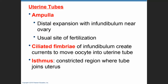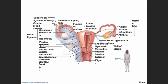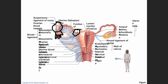The uterine tubes consist of three parts: the ampulla, the ciliated fimbria, and the isthmus. The isthmus is the smaller constriction of the tube as it joins with the uterus. The ampulla will be the enlargement of the tube close to the ovaries, and the fimbria are finger-like projections that move and attract the ovulated oocyte to the uterine tubes. Even though in these pictures it looks like the ovaries and the uterine tubes are touching, in reality they're not — there's a space between them. So the fimbria will move and gather to itself the ovulated oocyte.